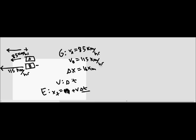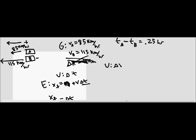Once again, we've got similar givens, though we don't have a change in X — we're actually trying to find the change in X. Instead, our given is that the time for A minus the time for B, or the longer time minus the shorter time, is going to be a quarter of an hour. The reason I wrote that instead of 15 minutes is because both of their velocities are in terms of hours, so our time has to be in hours as well, and 15 minutes is a quarter of an hour. Our unknown in this case is the change in X.